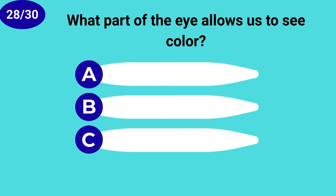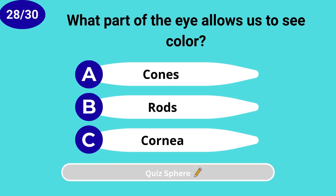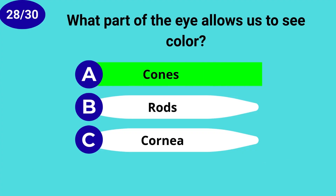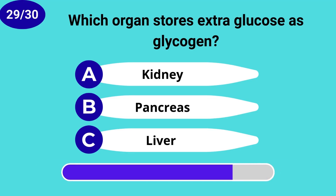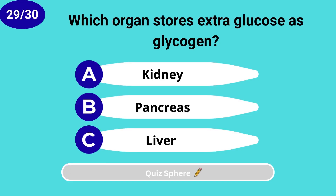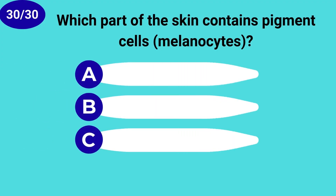What part of the eye allows us to see color? Cones. Which organ stores extra glucose as glycogen? Liver. Which part of the skin contains pigment cells? Melanocytes. Epidermis.